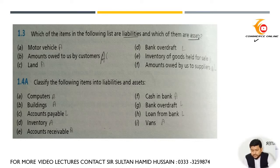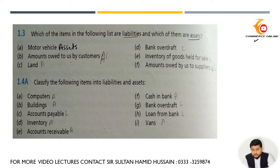What you need to do is figure out which account is an assets account and which account is a liabilities account. Motor vehicle is an assets account. Amounts owed to us by customer — when you sell something to a customer on credit or on account, this account is known as amounts owed to us by a customer.